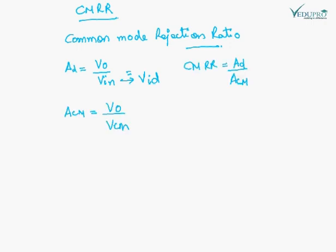CMRR is given by AD upon ACM, where AD is the differential gain and ACM is the common mode gain.